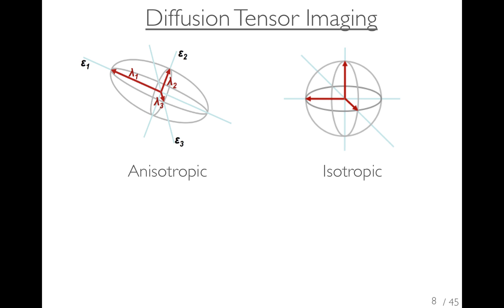And we can summarize this tensor, which is this football or spherical shape, by decomposing it into three eigenvalues and three eigenvectors. The eigenvalues are lambda 1, lambda 2, and lambda 3. And the eigenvectors are epsilon 1, epsilon 2, and epsilon 3.